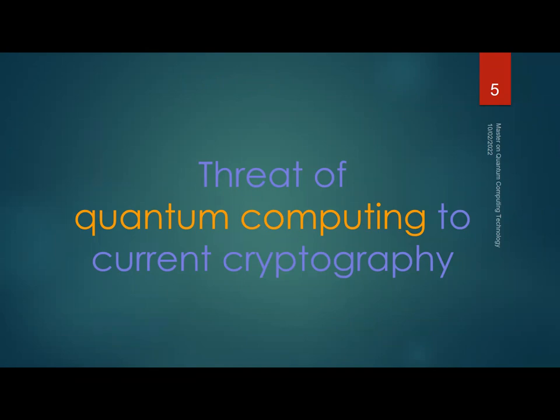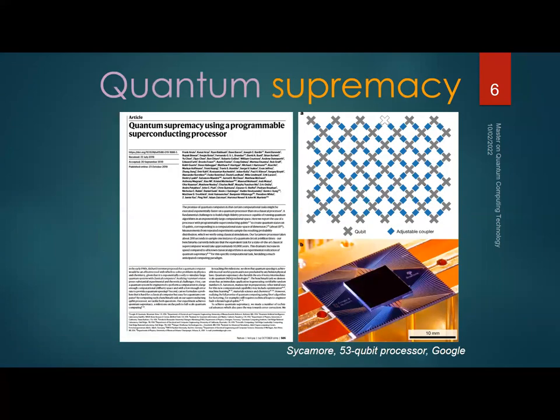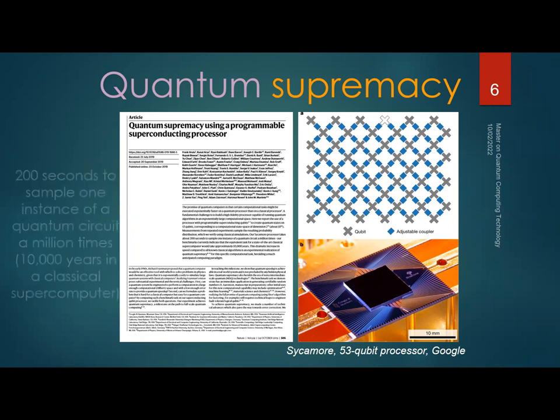In 2019, Google demonstrated quantum supremacy with their 53-qubit processor Sycamore. Basically, they simulate a space of 2^53 qubits and simulate each state. It takes about 200 seconds to sample one instance of this quantum circuit, compared to 10,000 years that it would take on a classical computer.